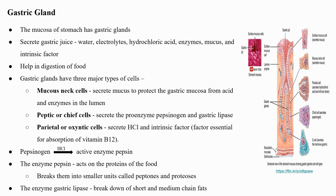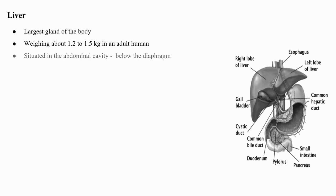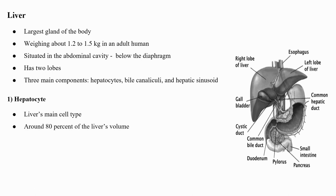The liver is the largest gland of the body, weighing about 1.2 to 1.5 kg in an adult human. It is situated in the abdominal cavity just below the diaphragm and has two lobes. The liver has three main components: hepatocytes, bile canaliculi, and hepatic sinusoids. Hepatocytes are the liver's main cell type, accounting for around 80 percent of the liver's volume, and play a role in a wide variety of secretory, metabolic, and endocrine functions.